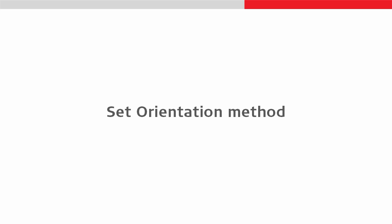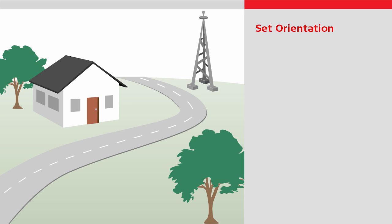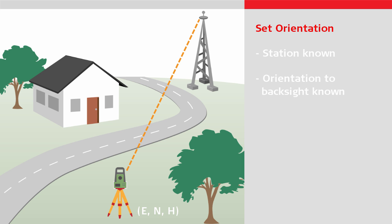Let's run through the set orientation method. Use set orientation in the following case: if the point over which you will position the total station is known, and you know the orientation to the back sight point — that is, you know the direction from where the total station will be positioned to the back sight. This could be a church tower, a cross on a mountain top, or any other known point. You don't need to be able to measure a distance to the back sight; that is optional, but you do need to be able to see the back sight.